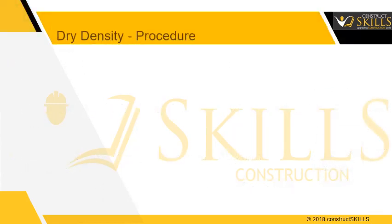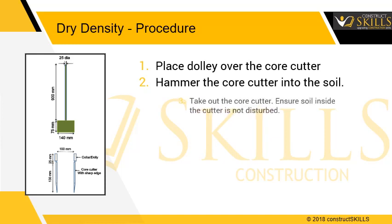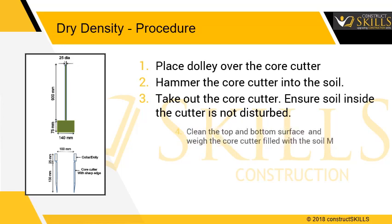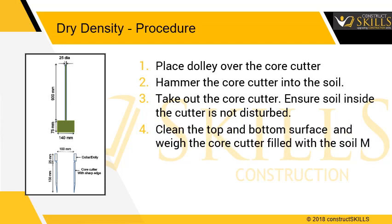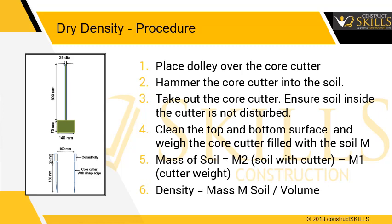Dry density method: place the dolly over the core cutter and hammer the core cutter into the soil. Remove the soil surrounding the core cutter and take out the core cutter. Ensure soil inside the cutter is not disturbed. Clean the top and bottom surfaces and weigh the core cutter filled with soil to the nearest gram, namely m2. Mass of soil equals m2 (weight of soil with cutter) minus m1 (weight of cutter). Density equals mass of soil divided by volume.